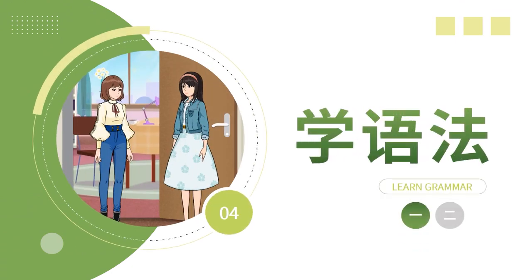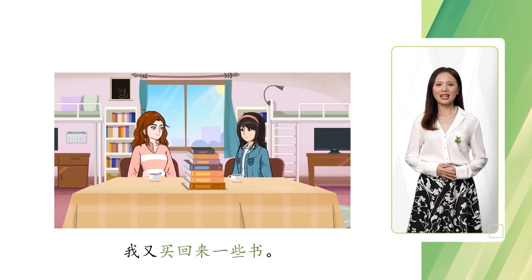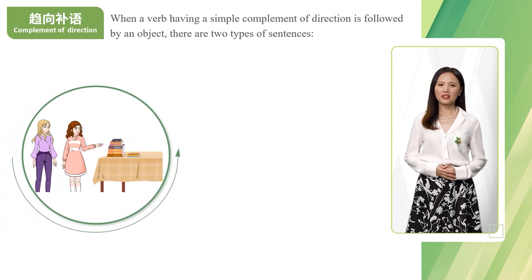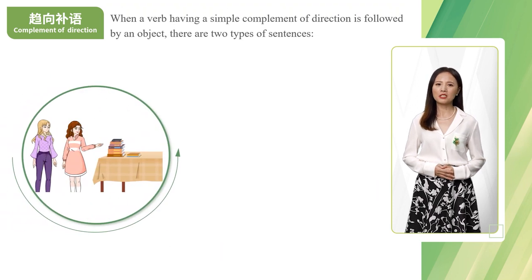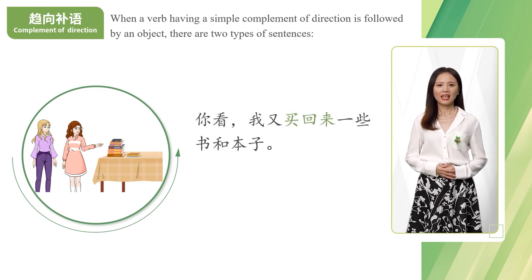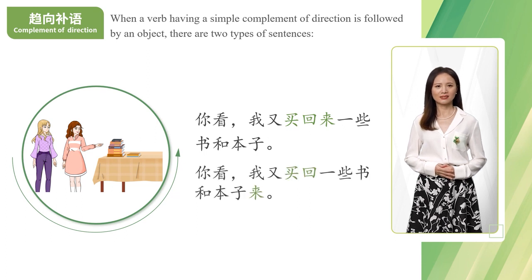Now, let's learn grammar. 你看，我又买回来一些书。我又买回来一些书。Now, let's learn the complement of direction. When a verb having a simple complement of direction is followed by an object, there are two types of sentences. 你看，我又买回来一些书和本子。你看，我又买回一些书和本子来。